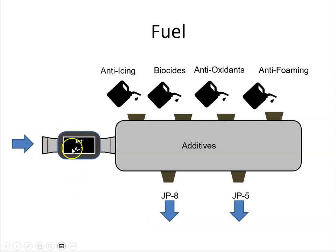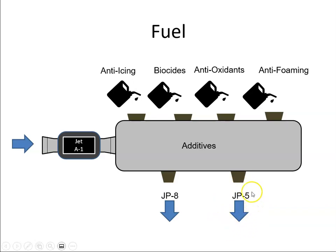Taking Jet A1 as an example, we can put it through a process where we add additives — anti-icing additives, biocide, antioxidants, and anti-foaming additives — to create derivatives like JP-8 and JP-5. JP-5 is associated with naval military operations to stop the fuel from foaming, since fuel in a ship's tank may foam as the ship pitches up and down, which can cause problems.